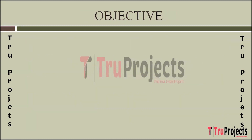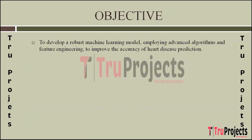The objectives of the project: the primary goal is to create a sophisticated machine learning model specifically tailored for heart disease prediction. This involves implementing advanced algorithms and incorporating feature engineering techniques to enhance the model's accuracy and effectiveness.